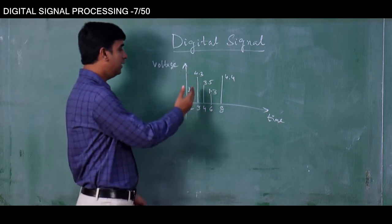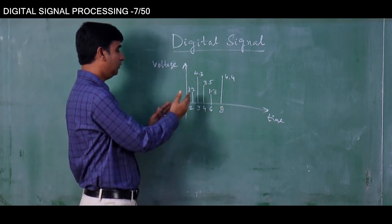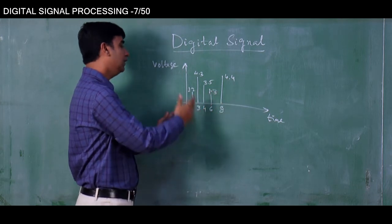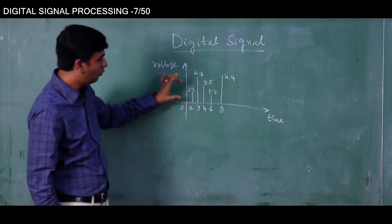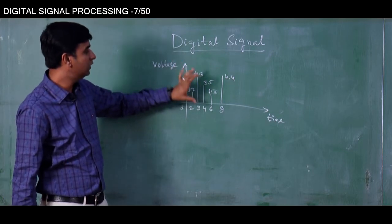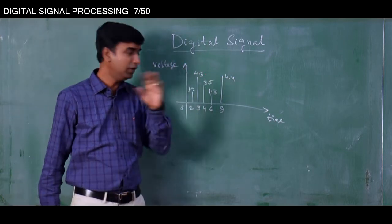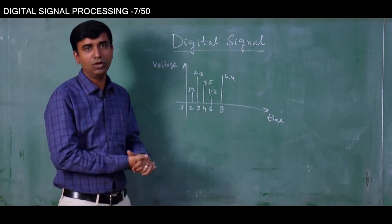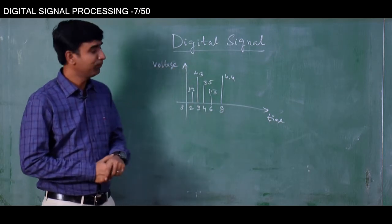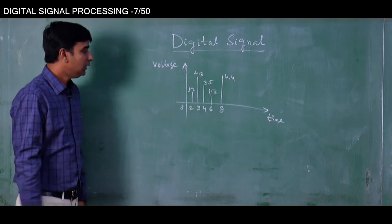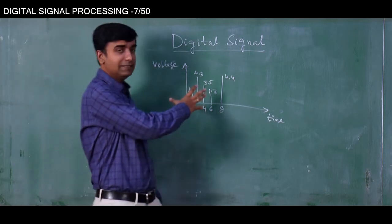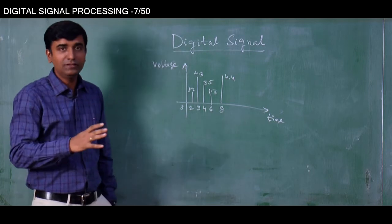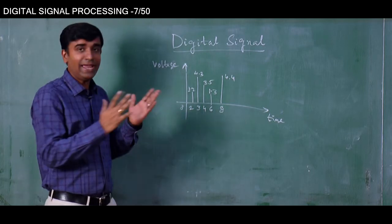At discrete instances of time, like at 2, at 3, at 4, 6, 8, it has got values like 1.2, 4.3, 3.5, and so on. It is derived from an analog signal which is the original signal. This digital signal we can represent in many types.